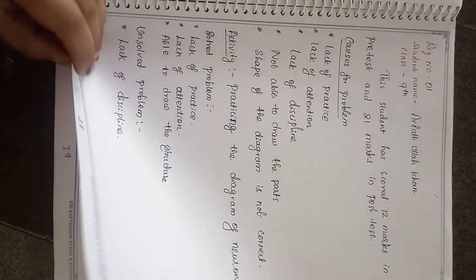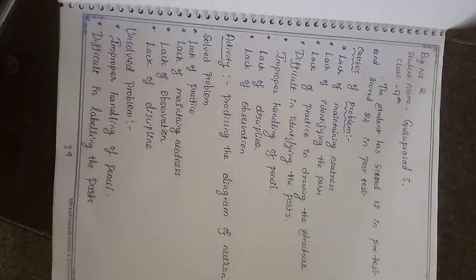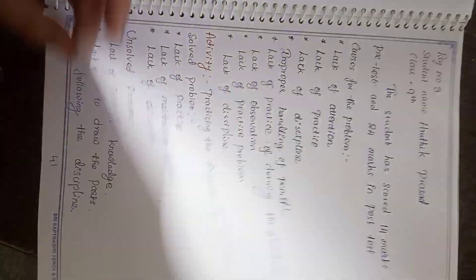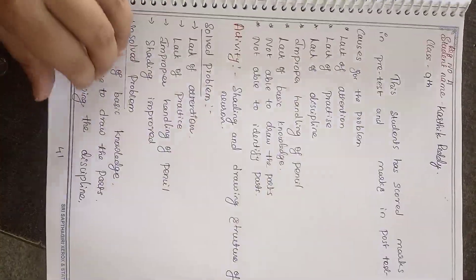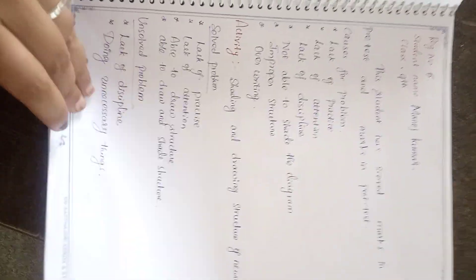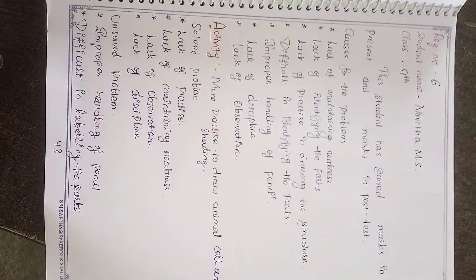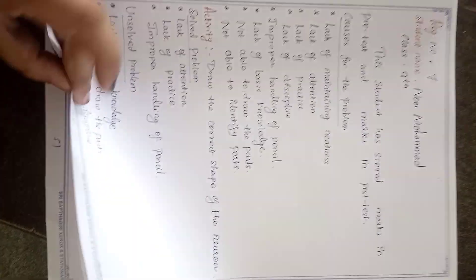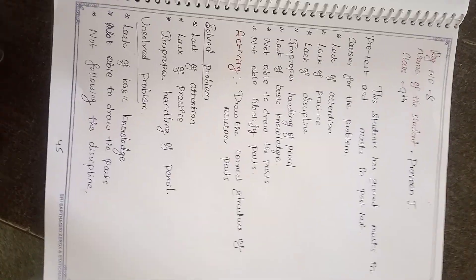Here we are writing each student's problem, causes, and activities — what we have improved or not. This covers each and every student's problem, reasons, and what measures we took to solve the problems.